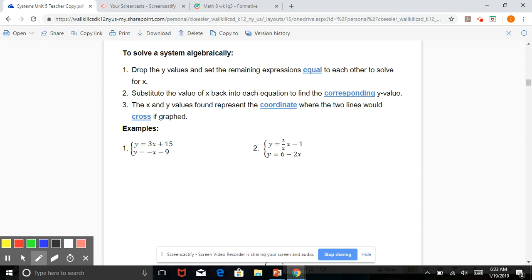Second, substitute the value of x back into each equation to find the corresponding y value. And third, the x and y values found represent the coordinate where the two lines would cross if graphed.